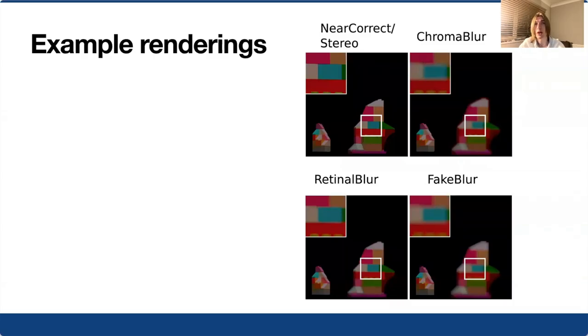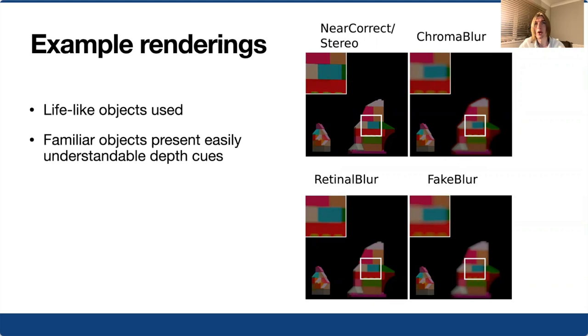Here are some example renderings of content presented in the experiment. We used life-like objects to ensure that other visual cues, such as relative scale, were easy for observers to interpret. This allowed us to isolate the presentation of focus cues as a factor in determining differences in perceived realism.